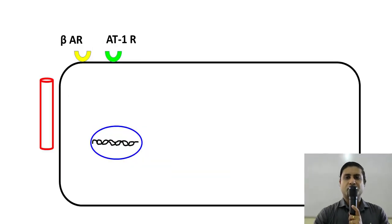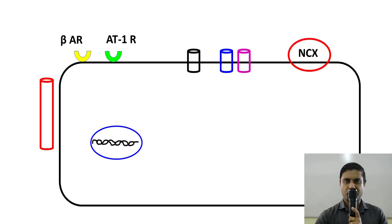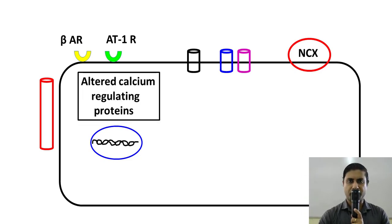In the hypertrophied cardiac myocyte, prolonged and sustained stimulation of beta-adrenergic receptors and AT1 receptors causes transcriptional reprogramming, resulting in the formation of suboptimal or altered voltage-sensitive sodium channels, potassium channels, and calcium channels. There is also altered sodium-calcium exchange — a very important protein when we start talking about a drug called digoxin. Third, calcium-regulating proteins get altered. We know that calcium is the most important ion responsible for contraction of the heart, and the proteins which regulate it become altered.